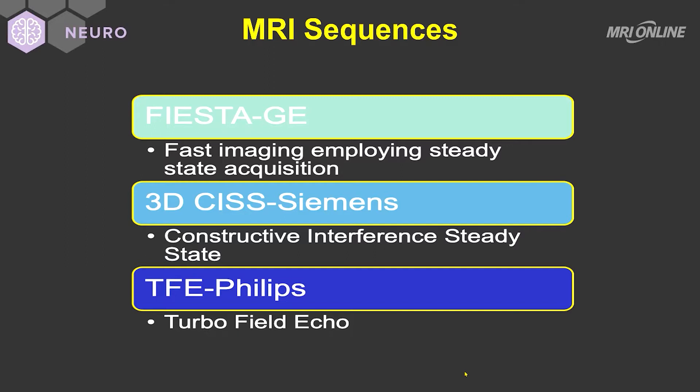You will hear these terms: fast imaging employing steady state acquisition — Fiesta — constructive interference steady state — CIS imaging with Siemens. Some people call it KISS, depending upon how romantic they are that day. I refer to it as CIS imaging. And then we have the Turbo Field Echo or TFE with Philips.